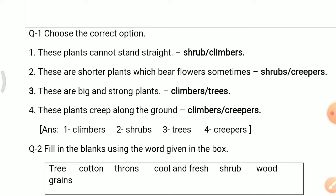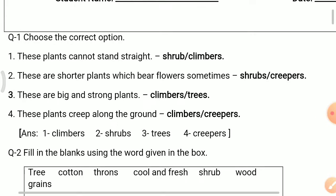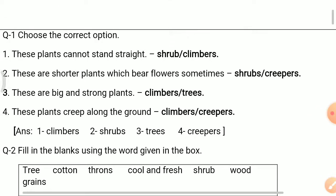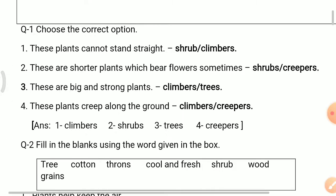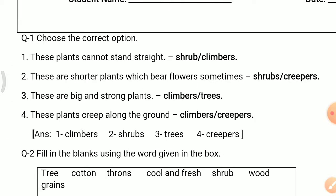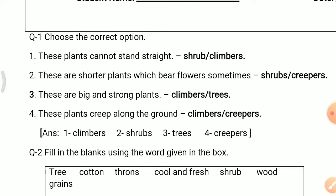Number 2: These are shorter plants which bear flowers sometimes. Options are shrubs and creepers. The answer is shrubs. Number 3: These are big and strong plants. Options are climbers and trees. The answer is trees. Number 4: These plants creep along the ground. Options are climbers or creepers. The answer is creepers.